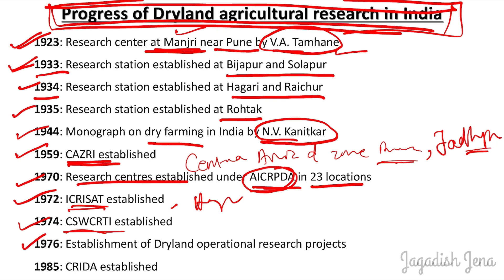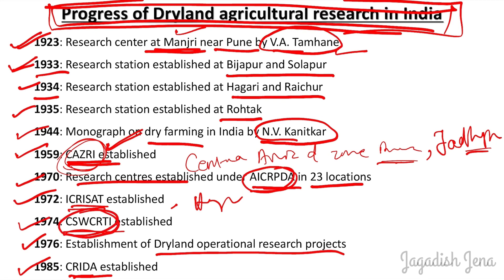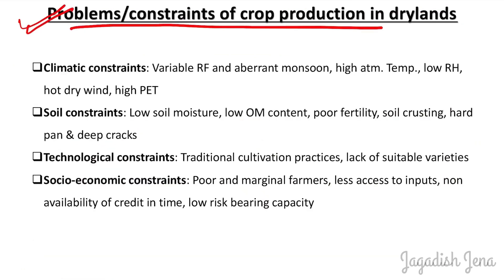In 1974, CSWCRTI (Central Soil and Water Conservation Research and Training Institute) was established. In 1976, the Dryland Operational Research Project was established. In 1985, CRIDA was established. Among these institutions, CAZRI in Rajasthan works under arid climate conditions; CSWCRTI focuses on soil and water conservation; ICRISAT works under semi-arid tropics; and CRIDA specializes in dryland agriculture.